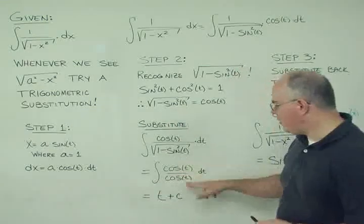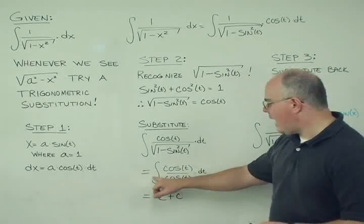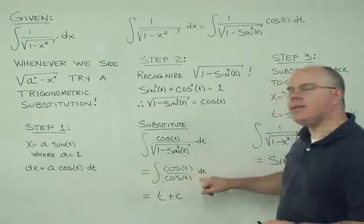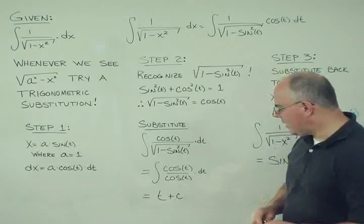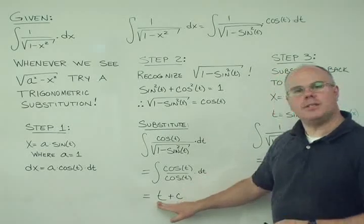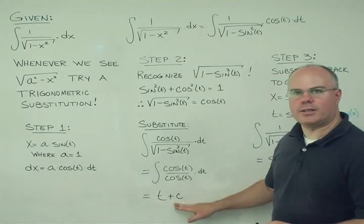Well, what do we find? We find that the two cosines cancel each other out, and we're just integrating dt. Well, that's about the simplest integral we're going to find in calculus. So the answer is t plus some integration constant.